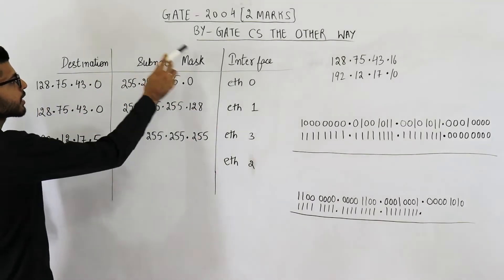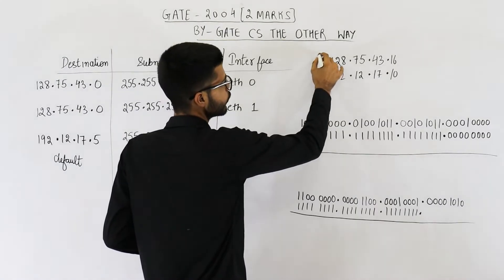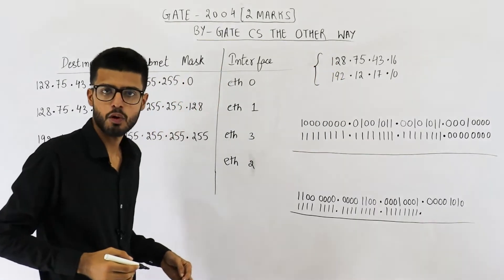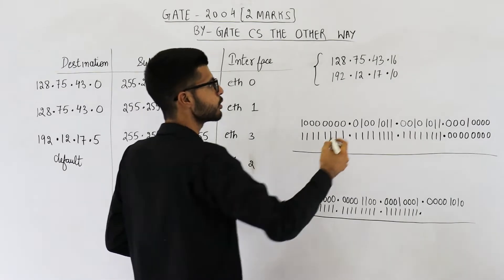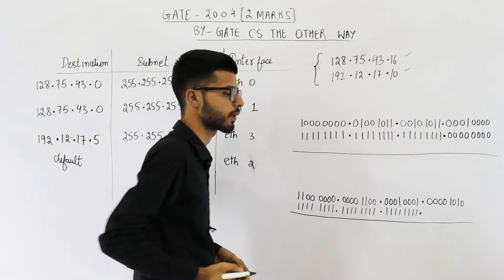This one is for two marks. They have given you the routing table of some router and they're asking on what interfaces will both of these packets be forwarded. Destination IP address of first packet is this one. Destination IP address of the other packet is this one.